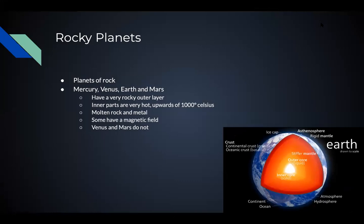The rocky planets are typically made of rock. We know them as Mercury, Venus, Earth, and Mars. They tend to have a very rocky outer layer, but the inner parts — the core areas — tend to be upwards of a thousand degrees Celsius. These inner areas are mostly made of molten rock and metal, and because of that some of them have a magnetic field, whereas Venus and Mars do not. This has to do with the way the core behaves.